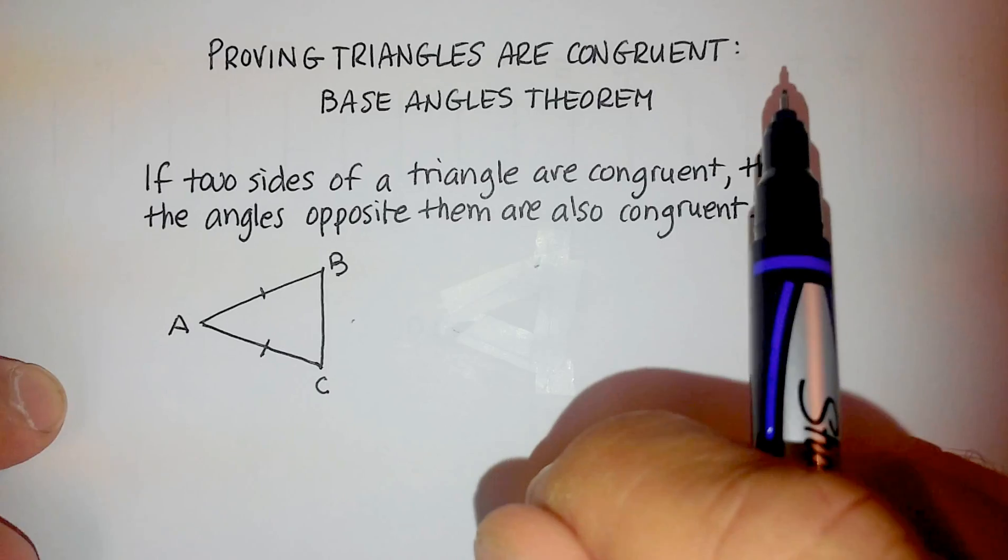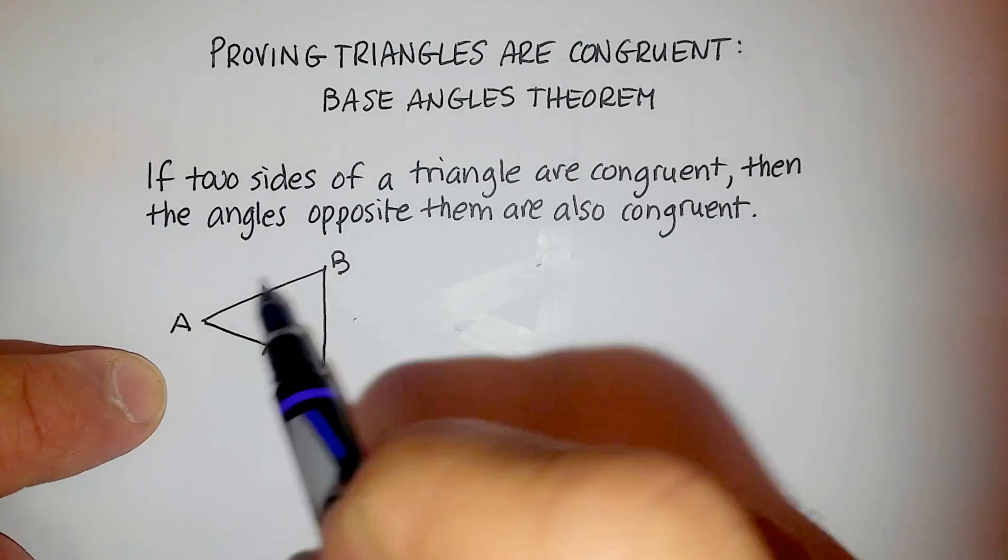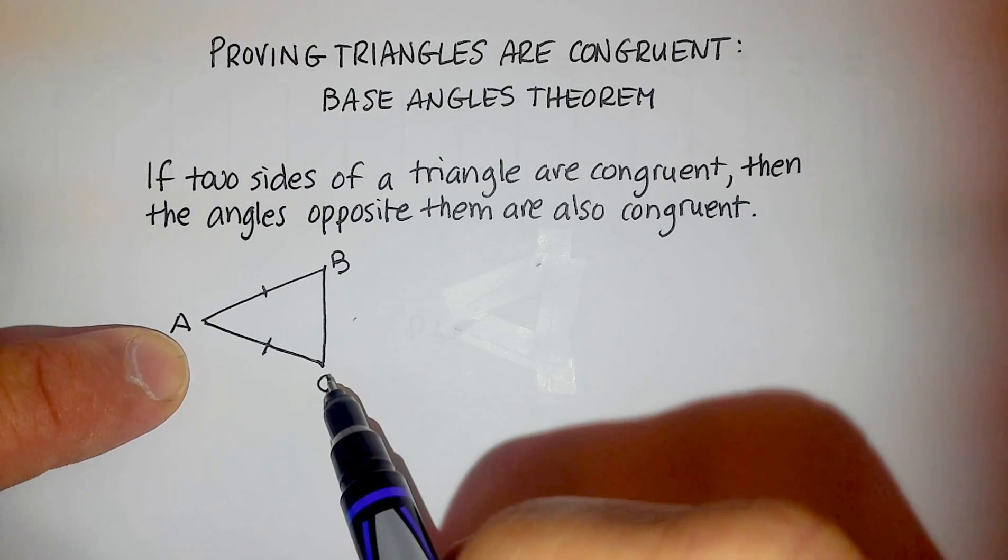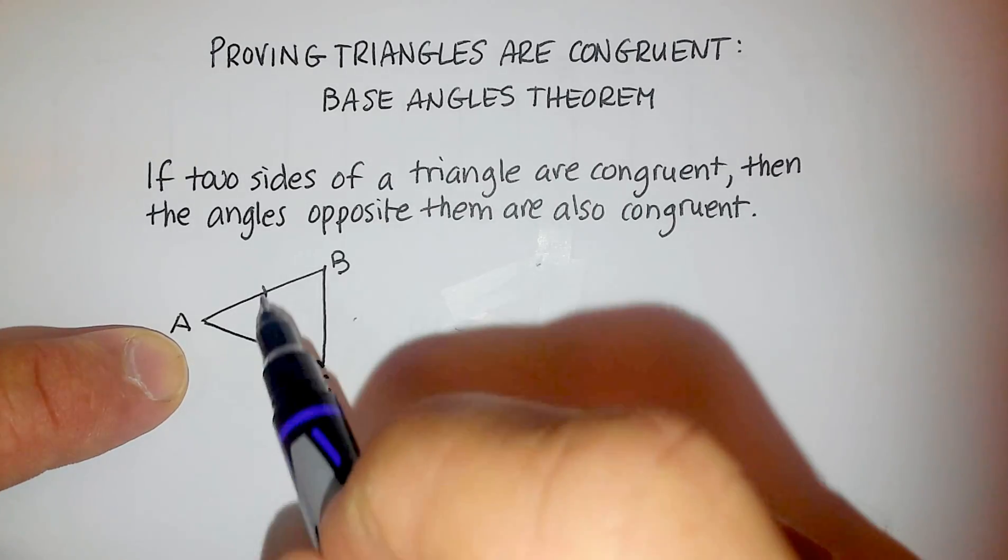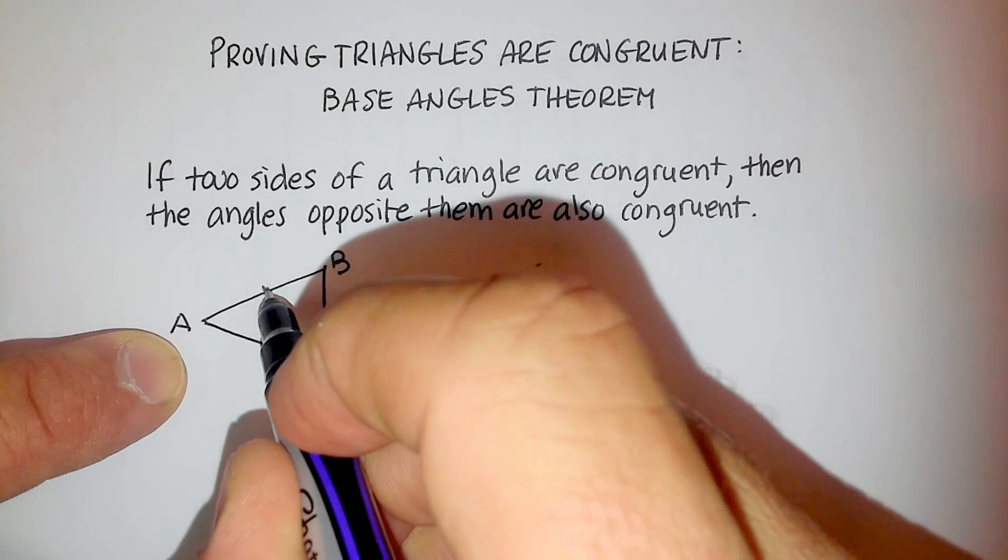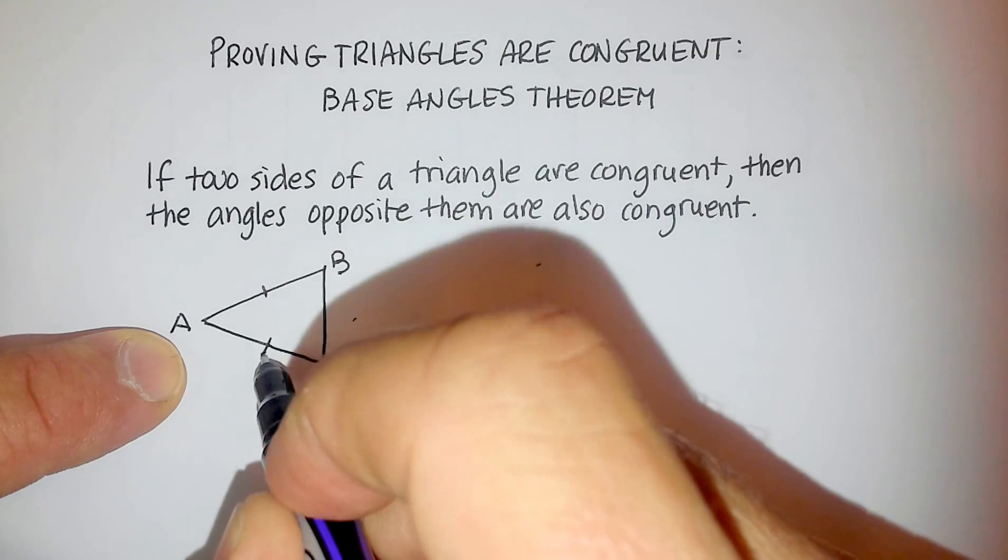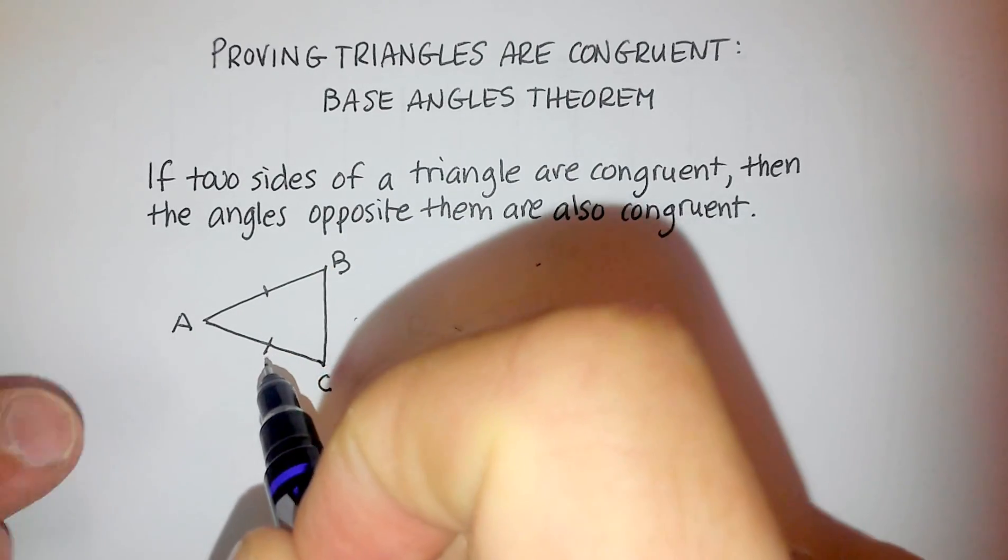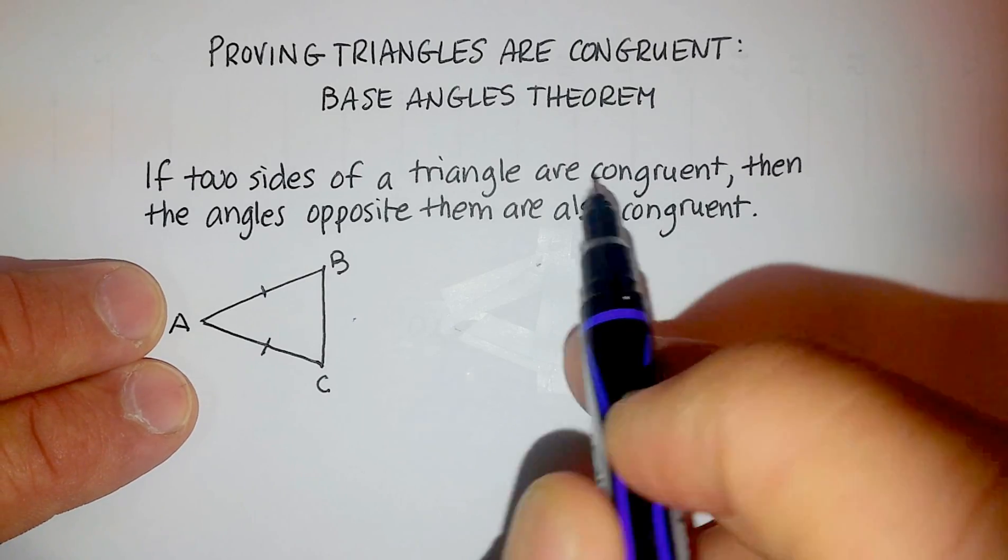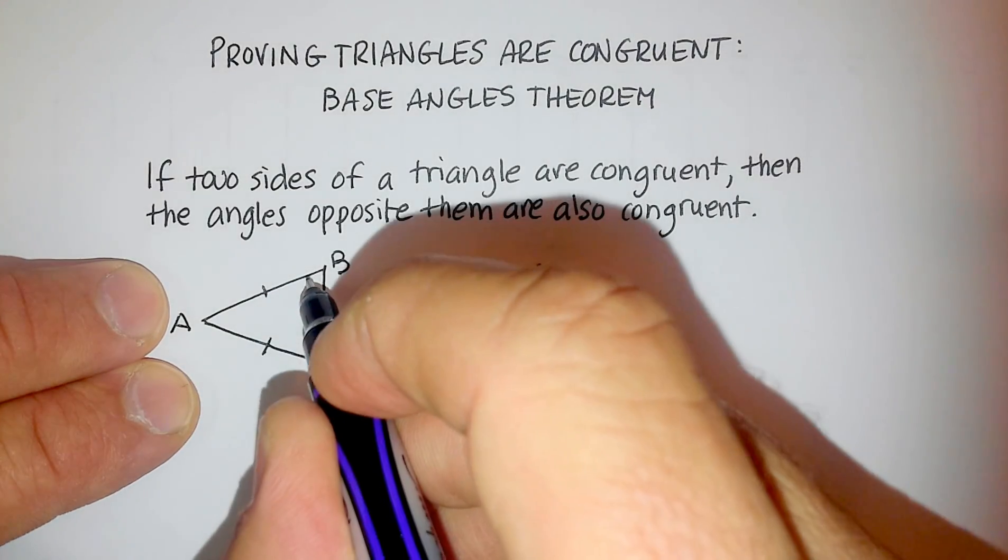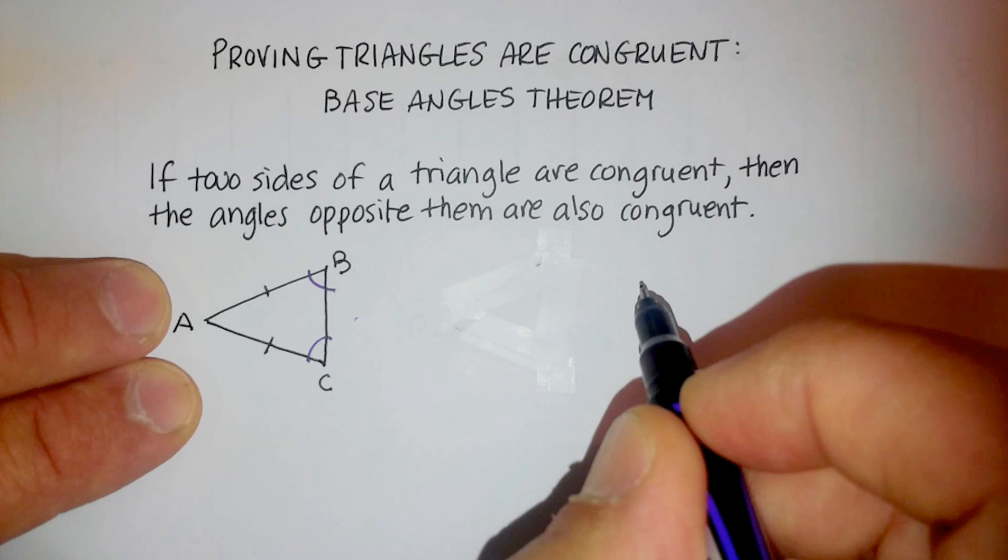Now, this base angles theorem says this. If you have a triangle, let's say triangle ABC, and two sides of this triangle are congruent. How do I know that two sides are congruent here? It's because of these little slash marks. Without them, I wouldn't know that they were congruent. But if two sides of a triangle are congruent, then the angles opposite them are also congruent.